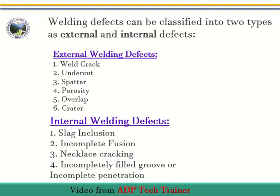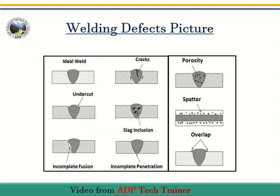Internal welding defects are: 1. Slag inclusion, 2. Incomplete fusion, 3. Necklace cracking, 4. Incompletely filled groove or incomplete penetration. Here are some pictures of the welding defects which can be checked through simple visuals.